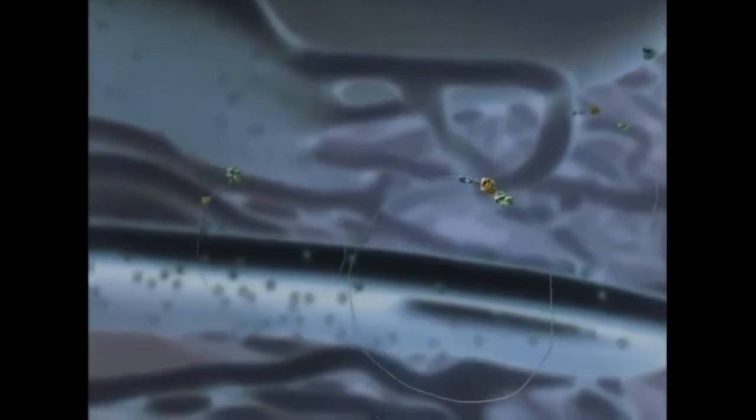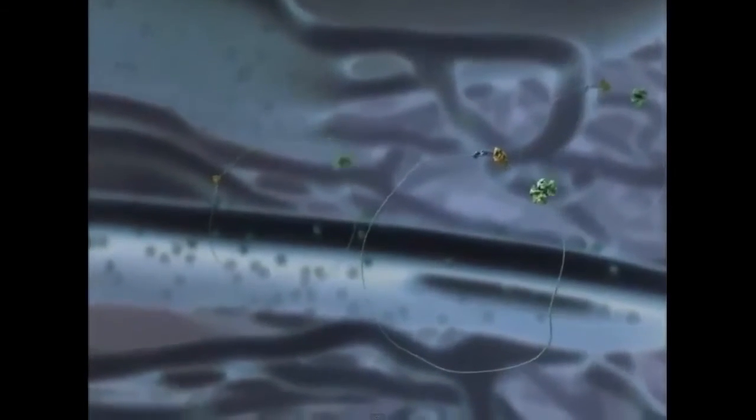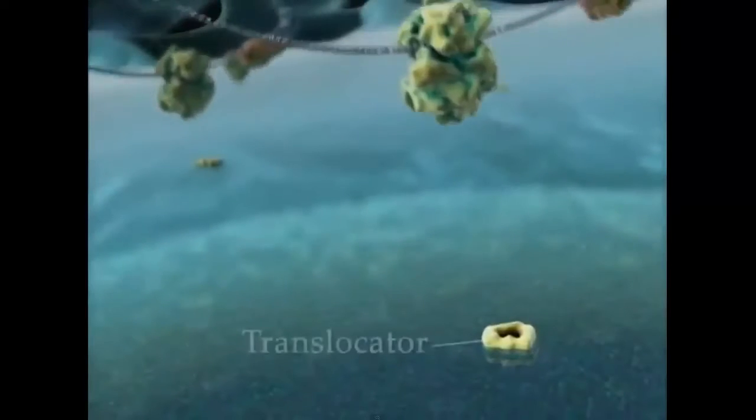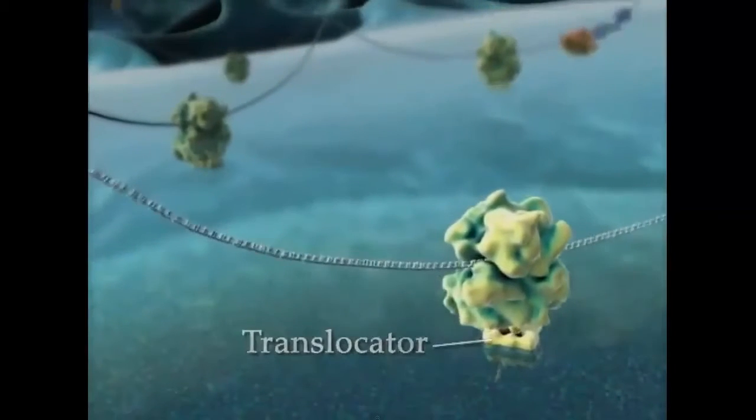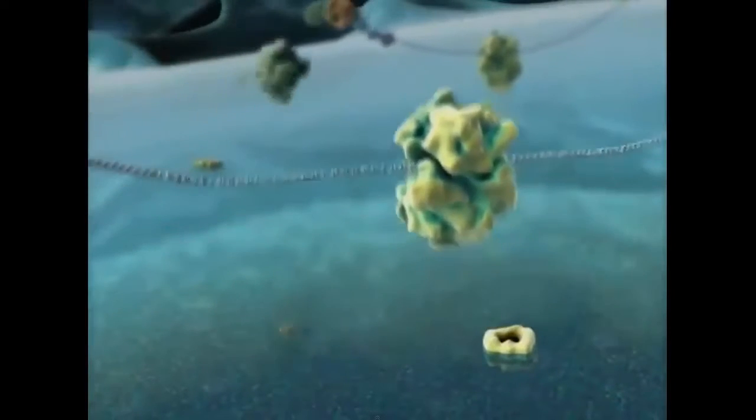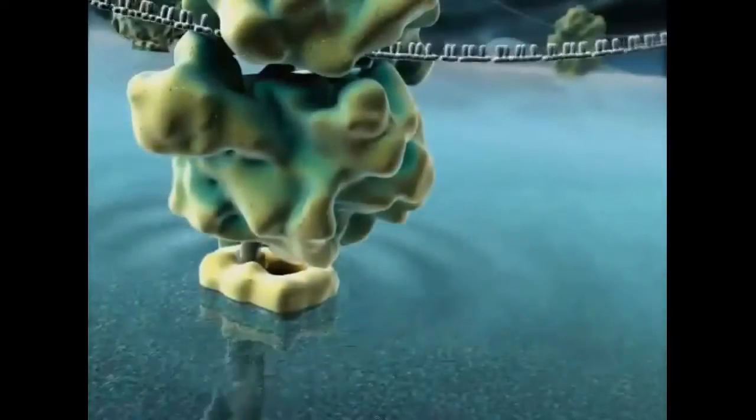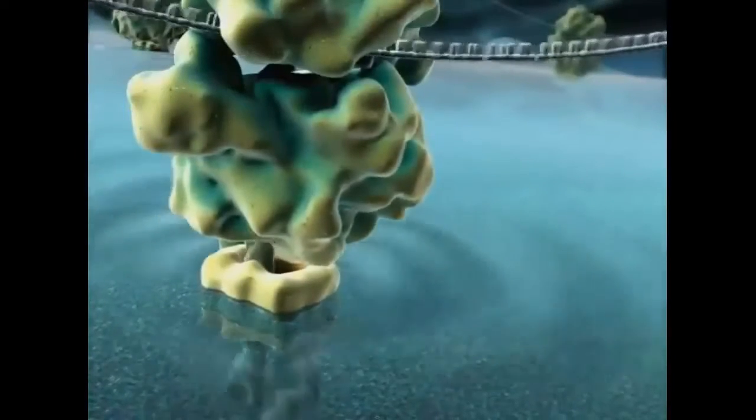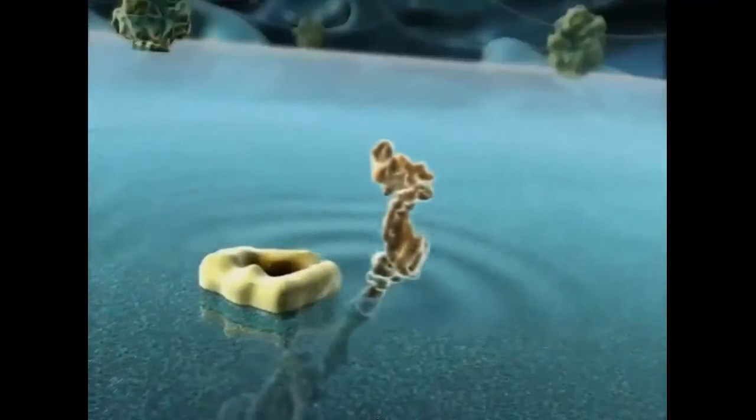The synthesis of cell-secreted and integral membrane proteins is initiated by free ribosomes, which then dock to protein translocators at the surface of the endoplasmic reticulum. Nascent proteins pass through an aqueous pore in the translocator. Cell-secreted proteins accumulate in the lumen of the endoplasmic reticulum, while integral membrane proteins become embedded in the endoplasmic reticulum membrane.